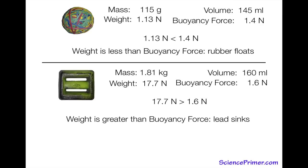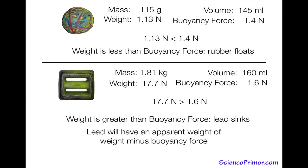Another question addressed in this video series is why objects immersed in water, even if they sink, appear to weigh less when underwater. The apparent weight of an object submerged in water is its weight minus the buoyancy force. For the lead: 17.7 newtons minus 1.6 newtons gives an apparent weight of 16.1 newtons.